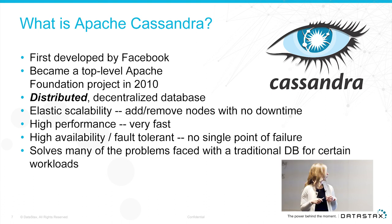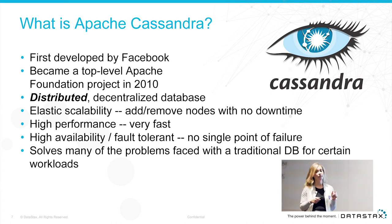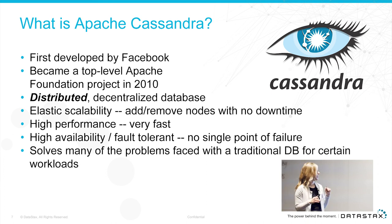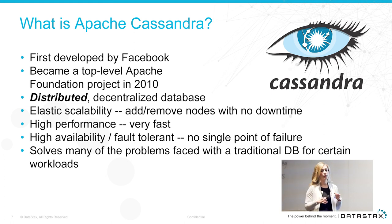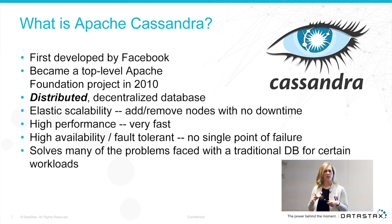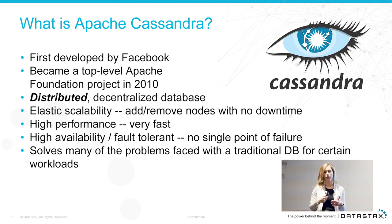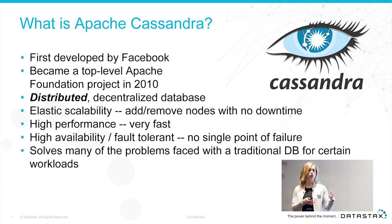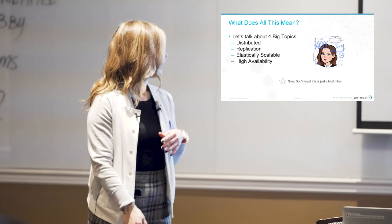Cassandra is a distributed, decentralized database. It's elastically scalable — you can add and remove nodes with no downtime. It has high performance, high availability, and low fault tolerance, with no single point of failure. That's one of my favorite things, and one of the reasons I came to DataStax. It solves many problems faced by traditional databases for certain workloads. When we're talking about NoSQL, it has its place, and relational databases have theirs.